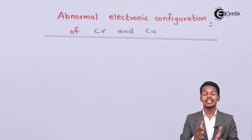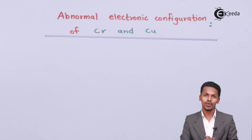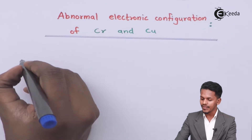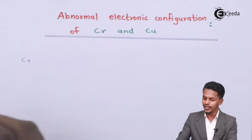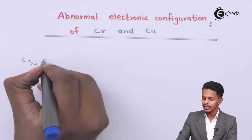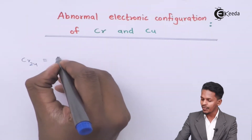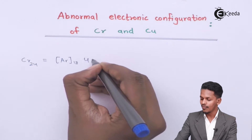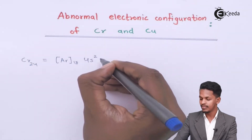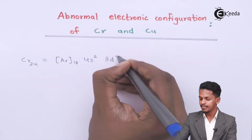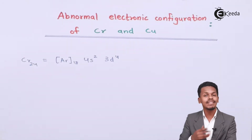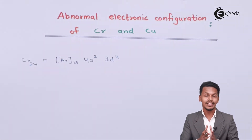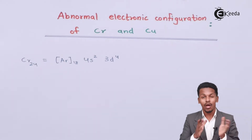As we discussed in the previous lecture about the electronic configuration of chromium and copper — if I talk about chromium, it has an atomic number of 24. Based on that, we could write the electronic configuration as [Ar] 4s² 3d⁴. This is actually the expected electronic configuration based on the general rules of how to fill electrons.